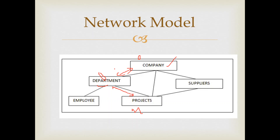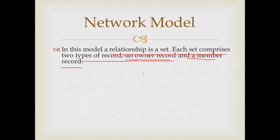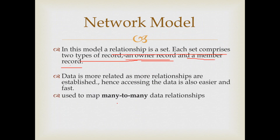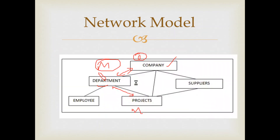If you have an owner record, then you have a member record. If you have a member record in one relationship, then you have a member record in another. What I'm saying is that the network model supports many-to-many relationships, whereas the hierarchical model only supports one-to-many relationships.